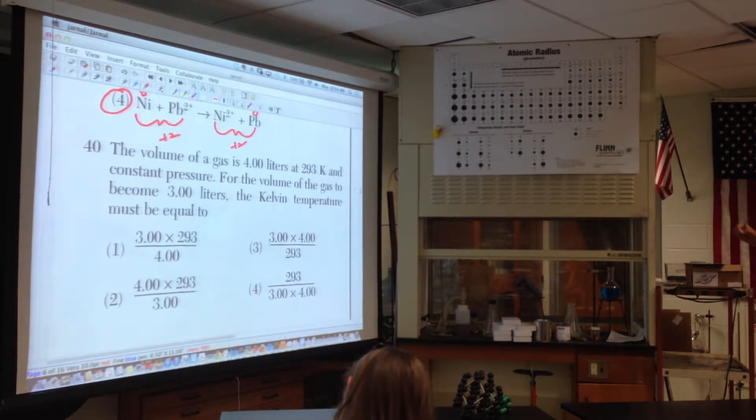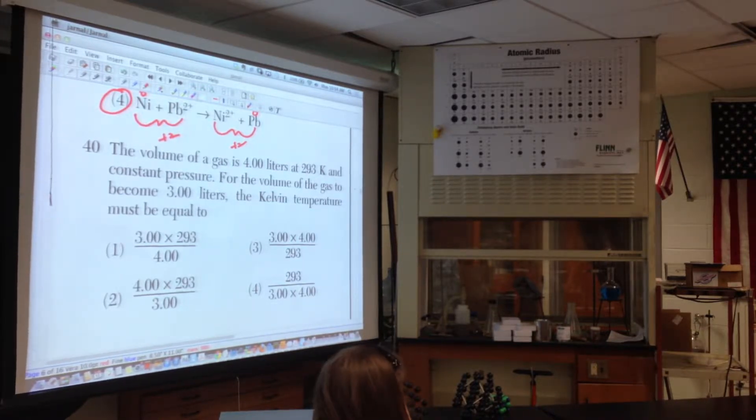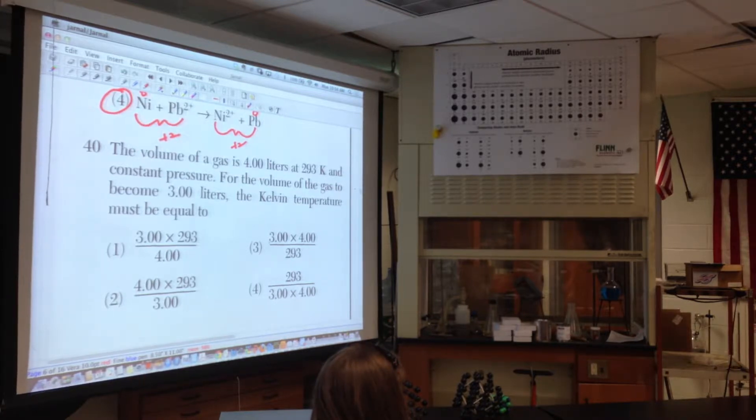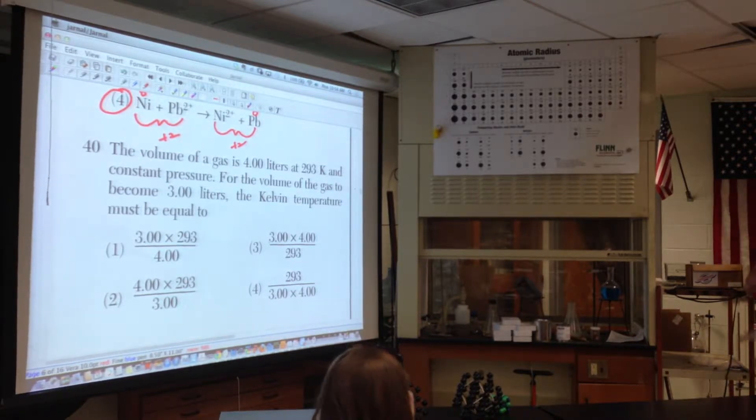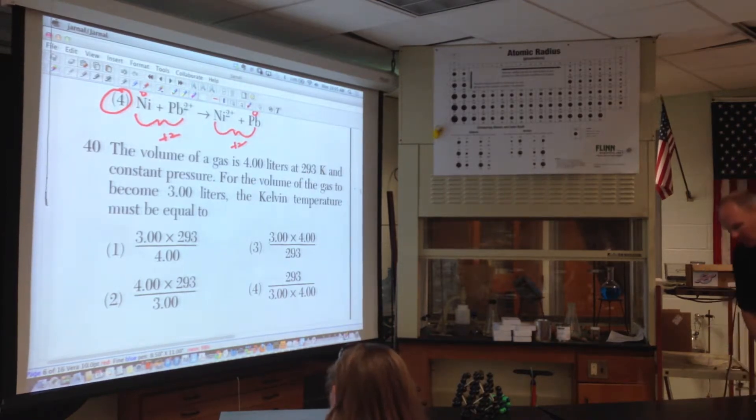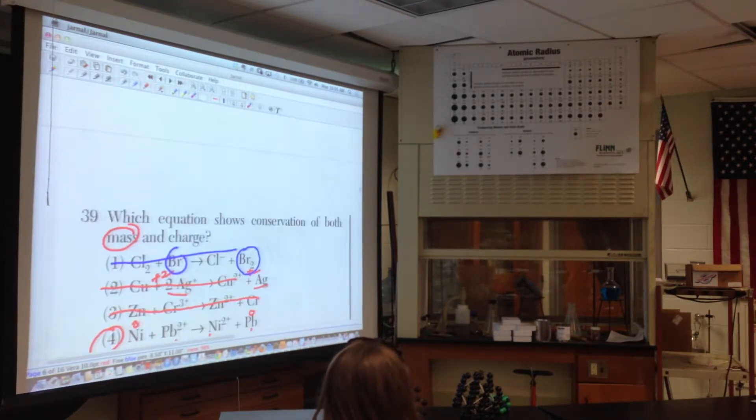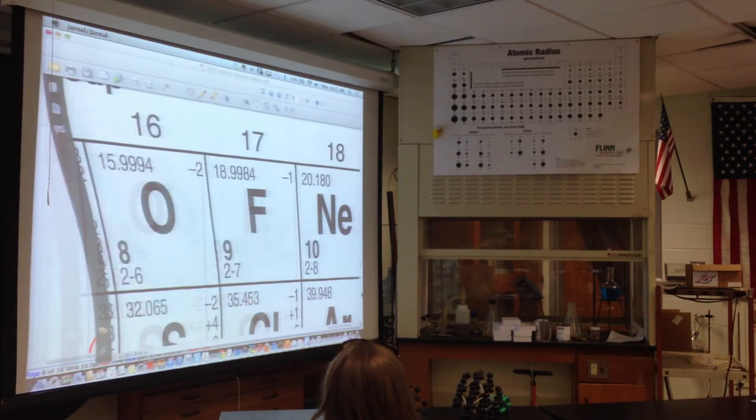Conservation of mass means same number of elements and same type on both sides. One nickel, one nickel, one lead, one lead. And charge means, of course, same charge on both sides. And both sides are plus two. Choice four. What was wrong with the first one? First one. The charge was conserved, but not the mass. You have what? Two bromides here and one bromide here. Good question.